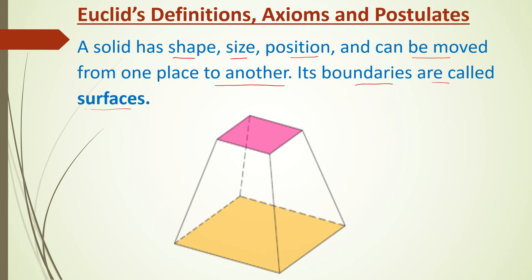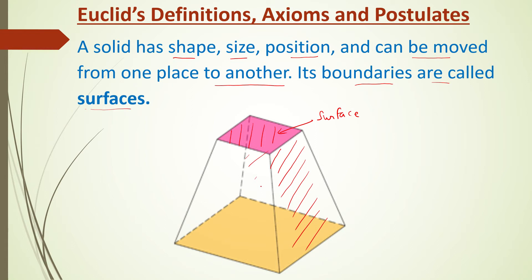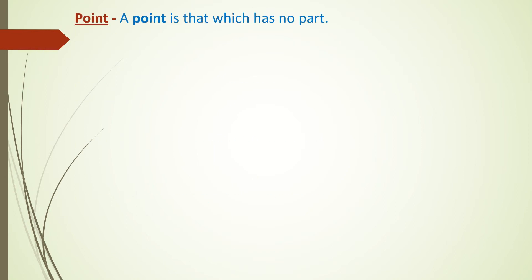This solid has several surfaces: this pink portion refers to a surface, this is also a surface, this is the backward surface, this is the leftward surface, and this is the bottomward surface. So any solid is basically composed of a shape, size, and position, and it can be moved from one place to another.